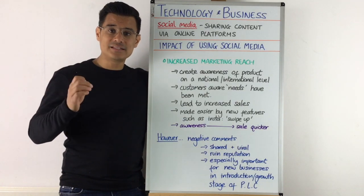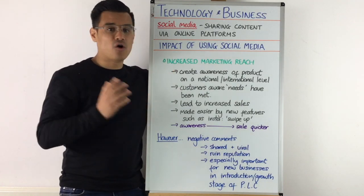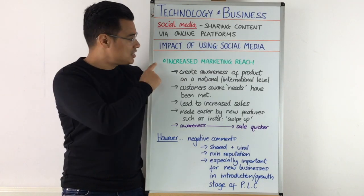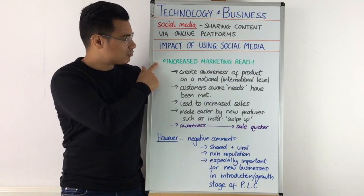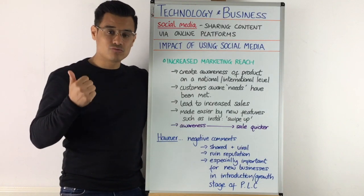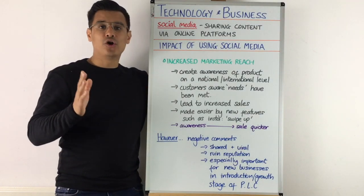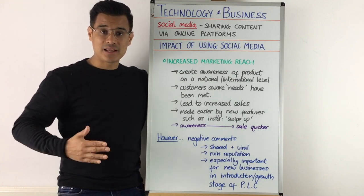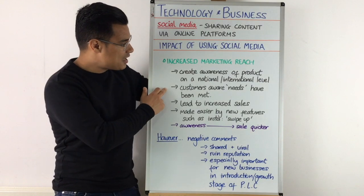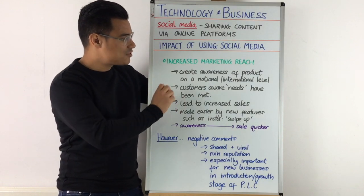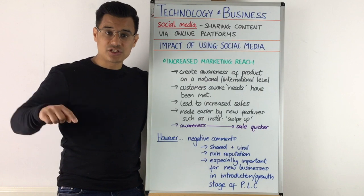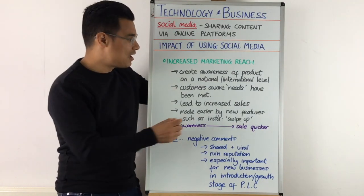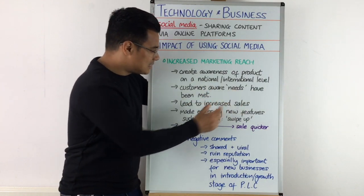The important thing to establish is the impact of a business using social media. The main reason why they use it is to get increased marketing reach — you can create awareness of a product on a national or international level, beyond just your local area. Therefore, customers are aware their needs have been met, not just locally but nationally or internationally.